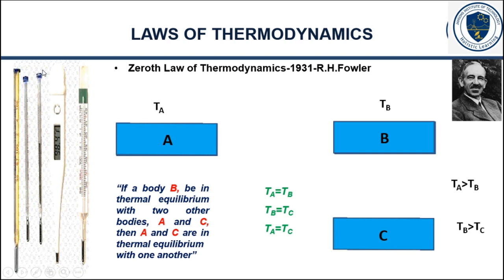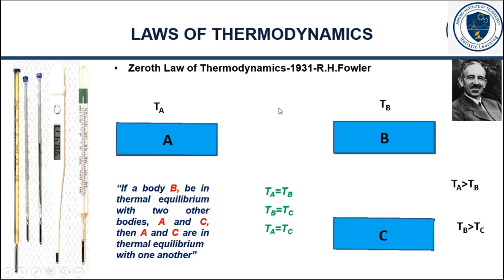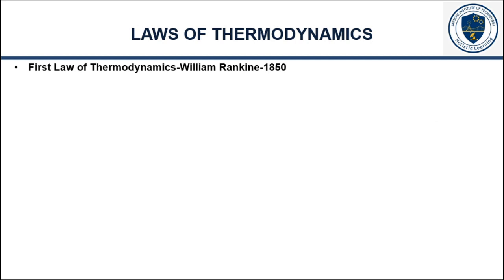This is the 0th law of thermodynamics. These concepts are essential for developing temperature measuring instruments like thermometers and thermocouples, which work based on the 0th law. The first law, second law, and third law were stated earlier, before 1931. The 0th law came later but explains the fundamental principle of temperature measurement — that is why the scientist numbered it 0. This law is called the 0th law of thermodynamics.